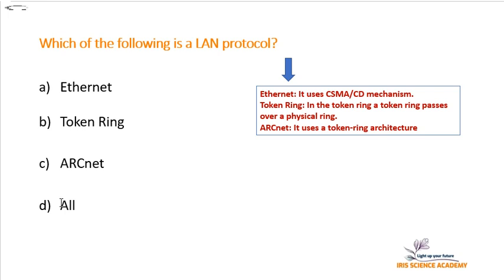ARCnet uses Token Ring architecture but has its own networking and its own topology. From this discussion, it is easy to say that the correct option is all of these — Ethernet is a protocol, Token Ring is a protocol, and ARCnet is also a protocol. So the correct option is D.